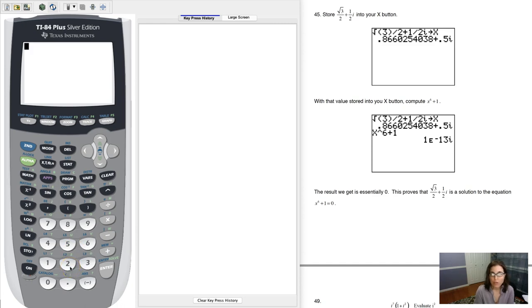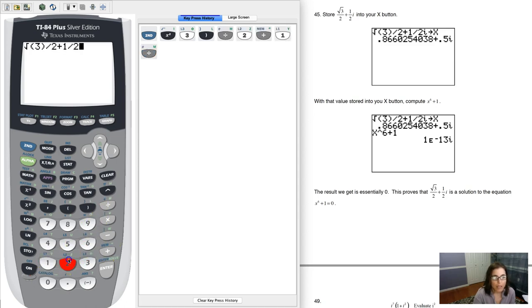So the first thing I want to do is store this number into my X button. So I'm going to actually go through the square root of 3 divided by 2, and I want to add to it 1 half I, and your I is over your decimal point, but in blue, so I'm going to hit second and the I key.